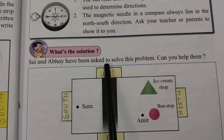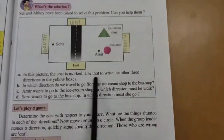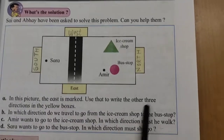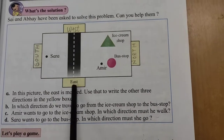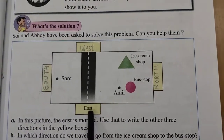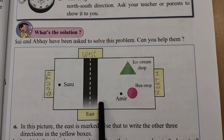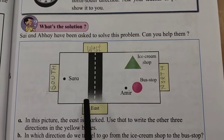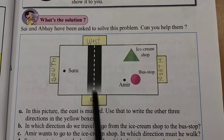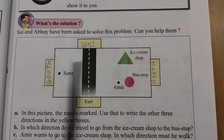Sai and Abhay have been asked to solve this problem — can you help them? In this picture, East is marked. Use that to write the other three directions in the yellow boxes. Opposite to East is West. Since East is here, to the left will be North, and here will be South.